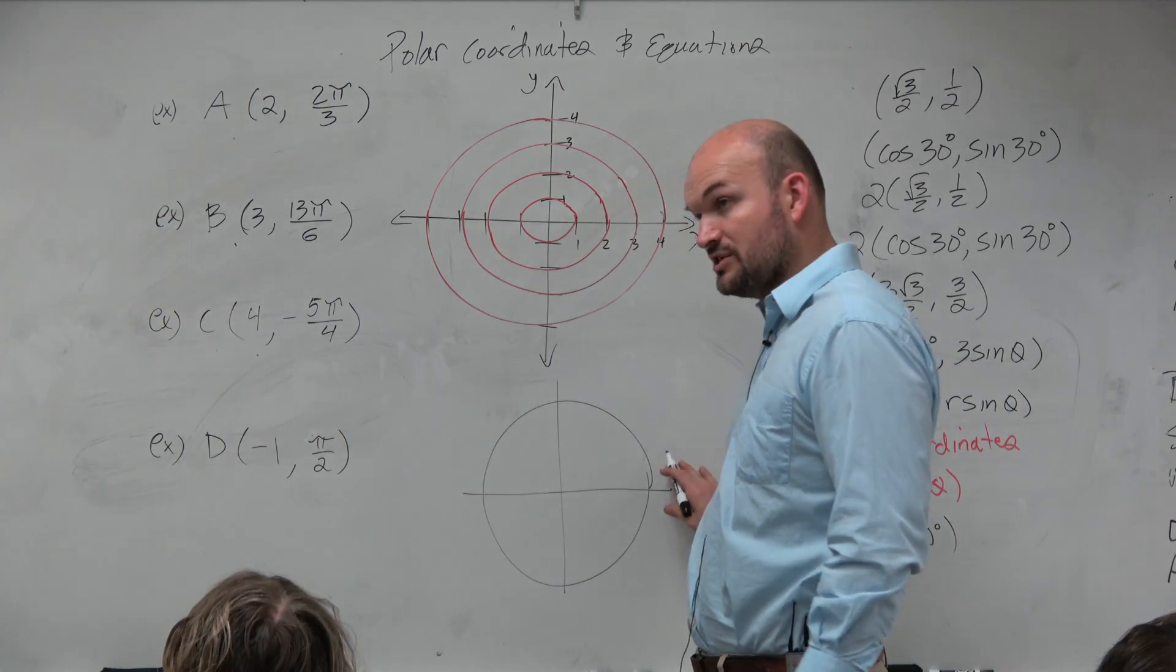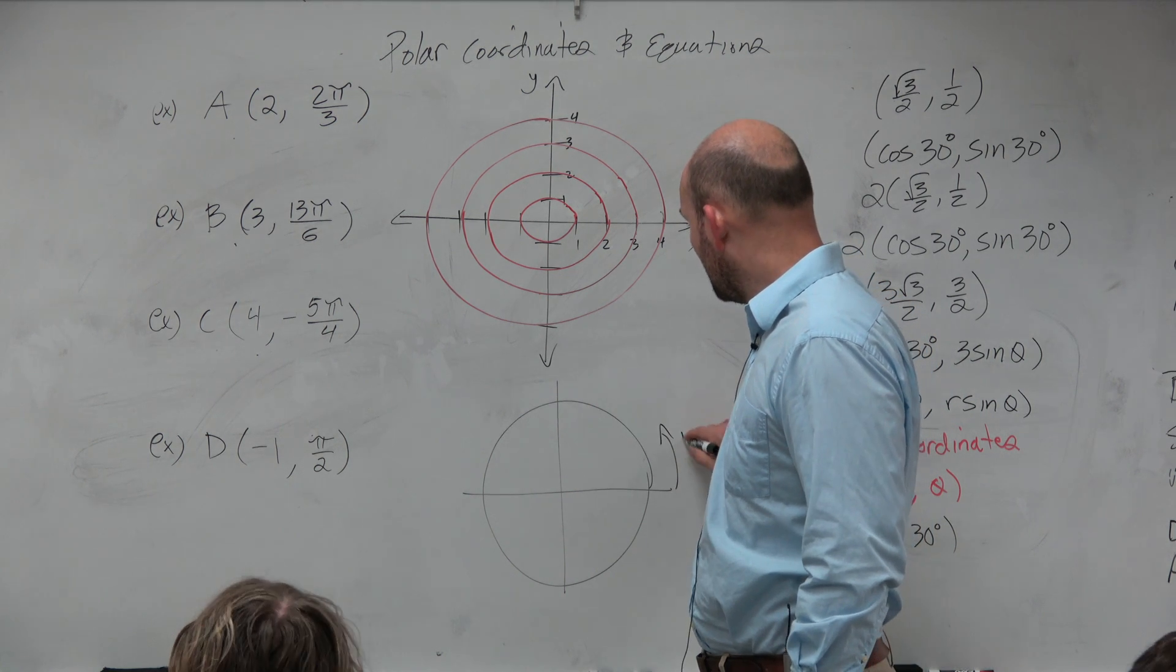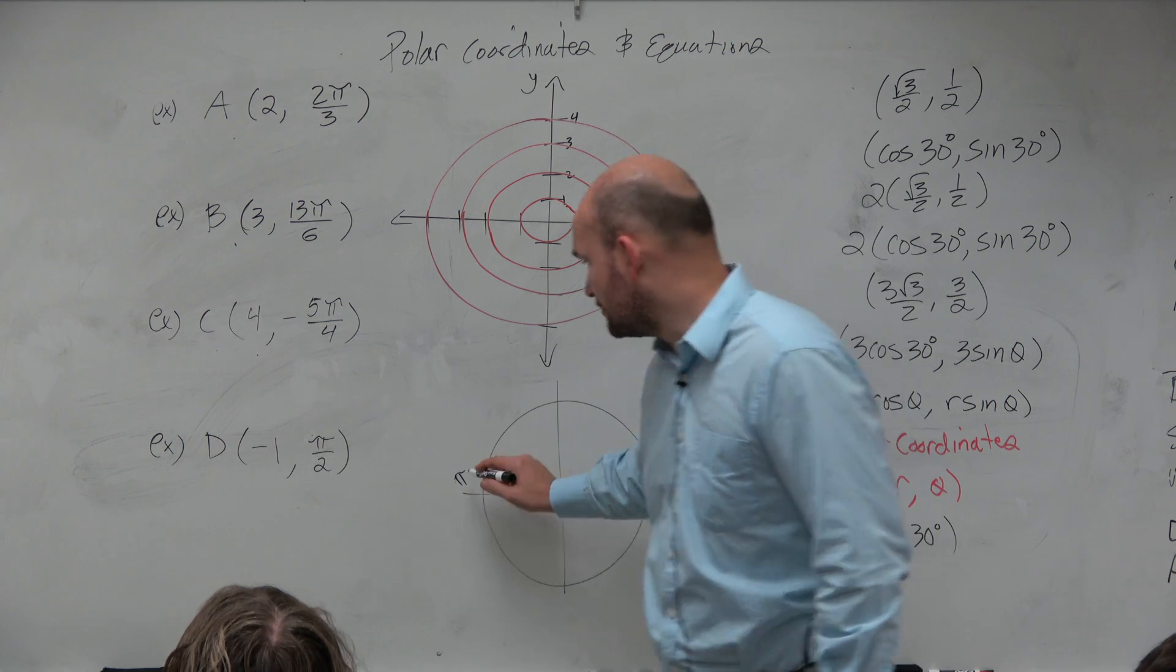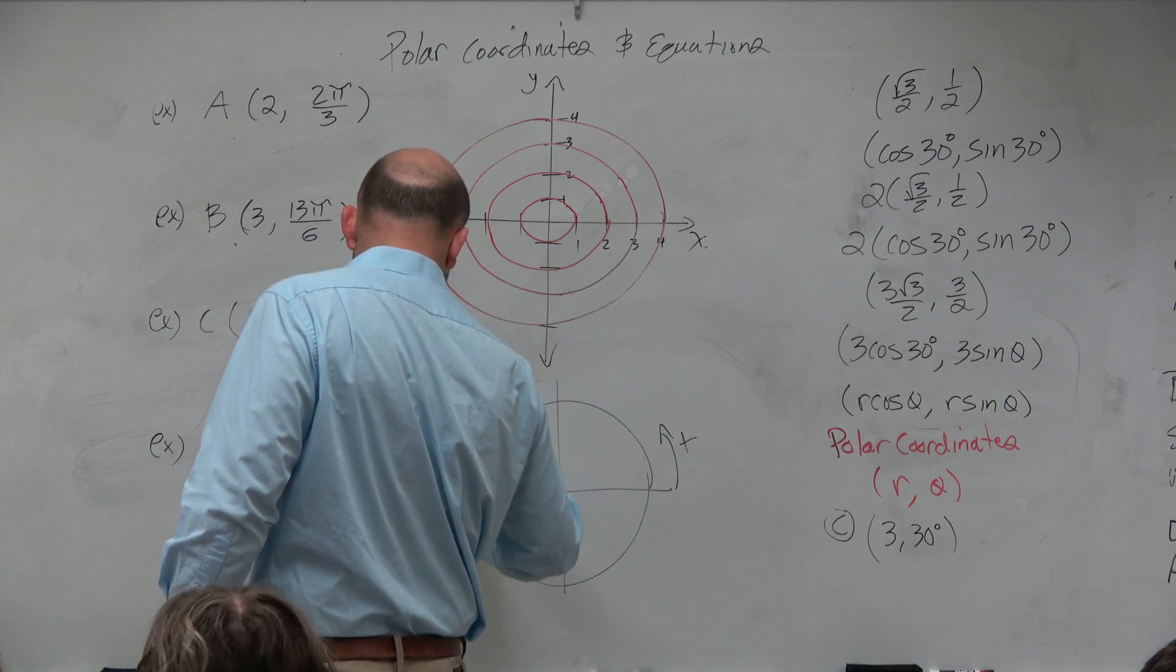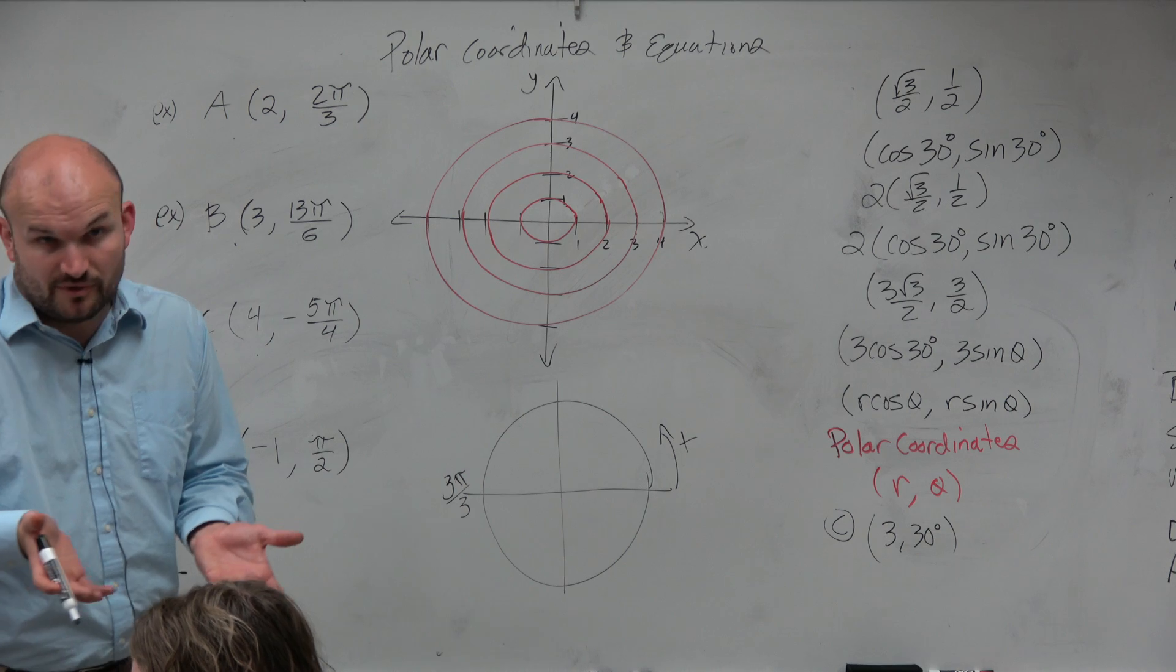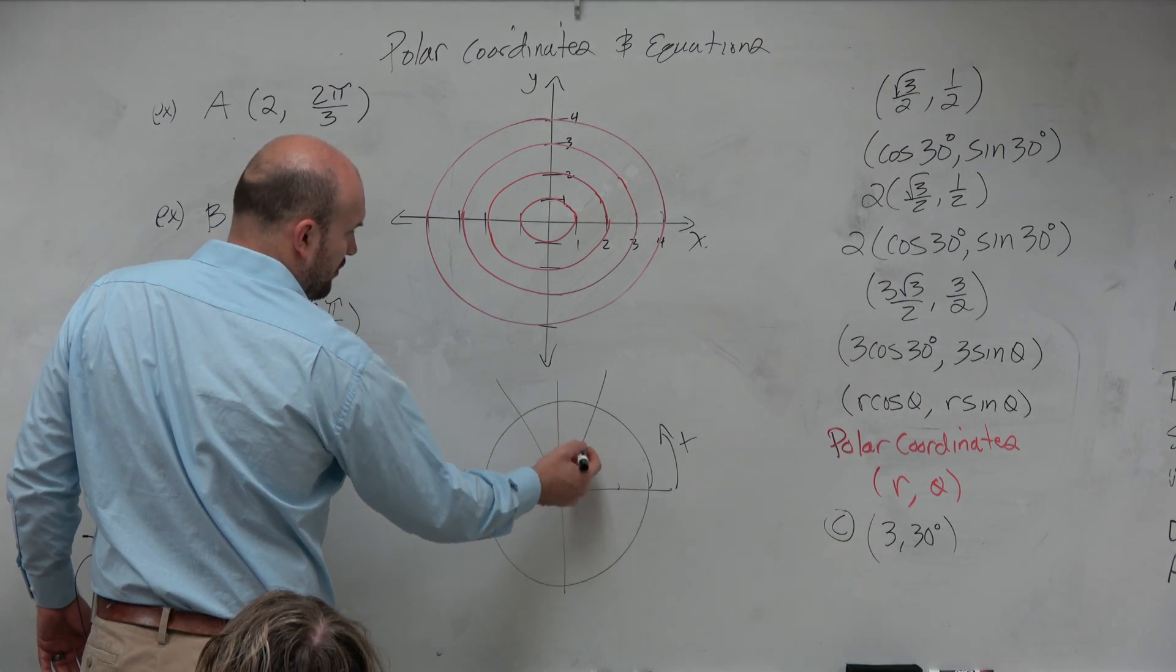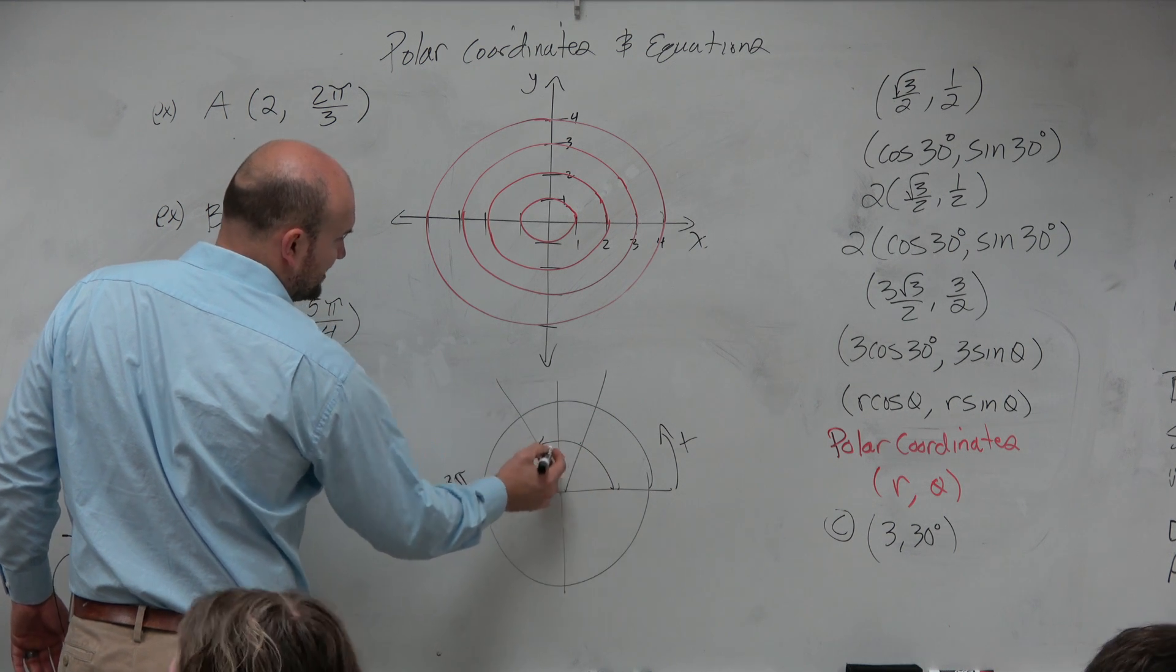Let's sketch the angle of where 2π/3 is. Remember, we always start here. Going counterclockwise is positive. Halfway around a circle is π, so therefore that's 3π/3. You could write π as 3π/3, so we can break that up into three parts: π/3, 2π/3. So that angle is right there.